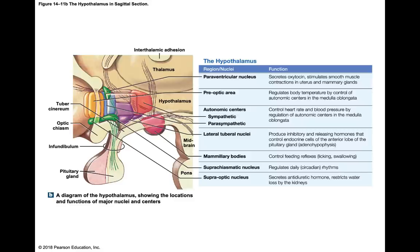Next is another area of the diencephalon — the hypothalamus. This quadrilateral structure right below the thalamus has many functions. We won't go through every individual area, but we need to know the functions of the hypothalamus.